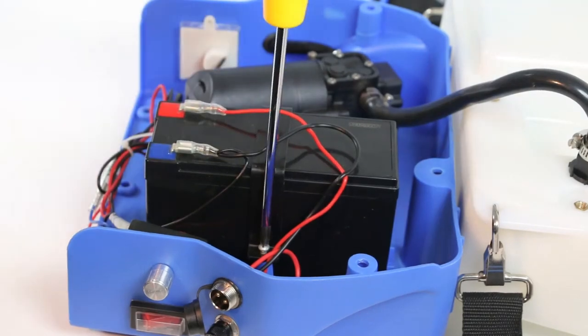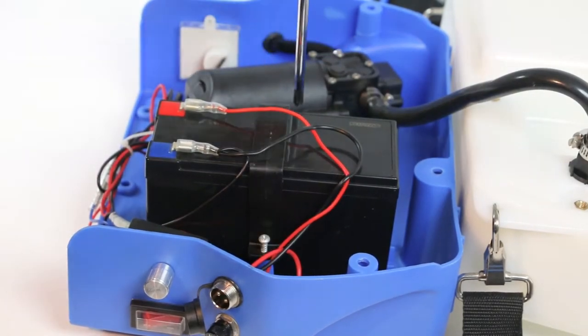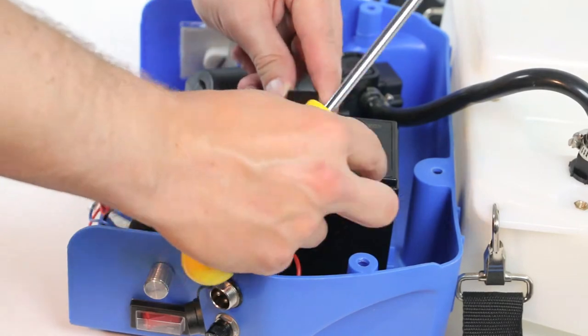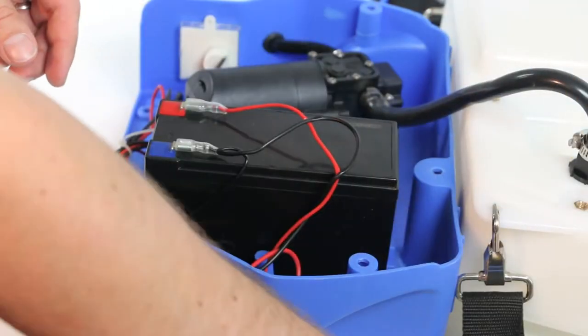The battery is secured to the cover via two screws and a bracket. Unscrew both screws to loosen the bracket. Remove the screws and the bracket and set aside for reassembly.